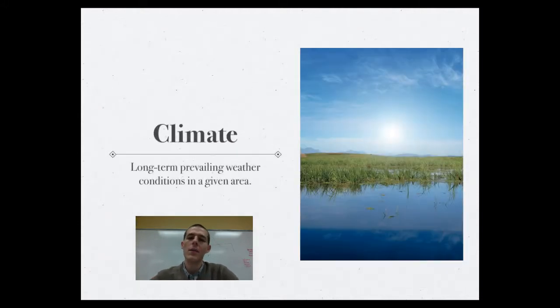So first up, let's talk about what climate is. Climate is just long-term prevailing weather conditions in a given area. Weather is what's going on right here, right now, or over the next couple days. Like today in Durham, I think it's going to be in the 50s, probably raining a little bit, and I think that's what it looks like for the rest of the week.